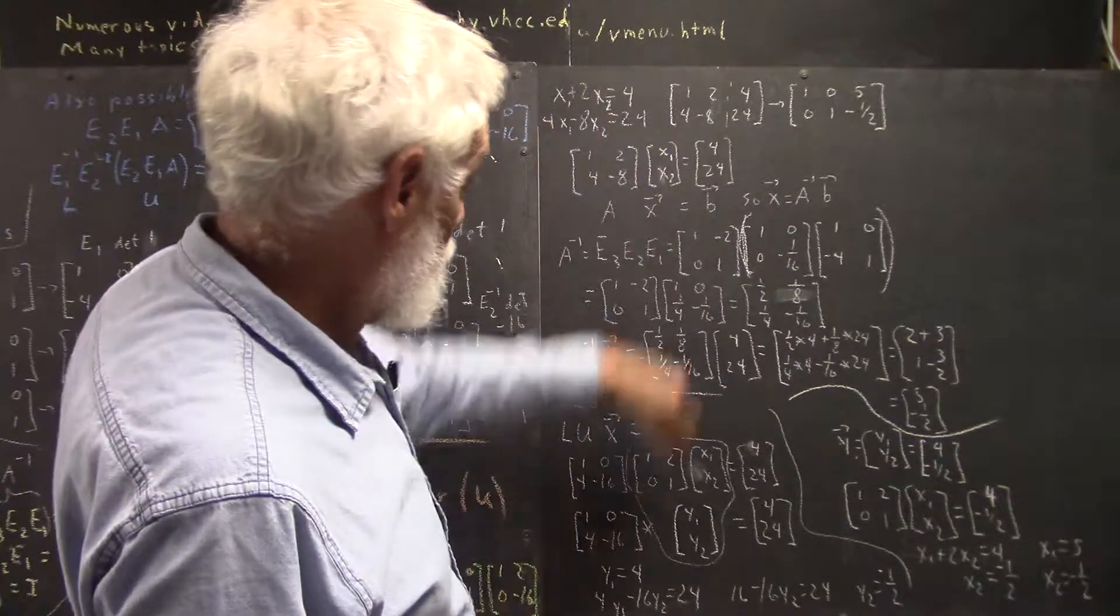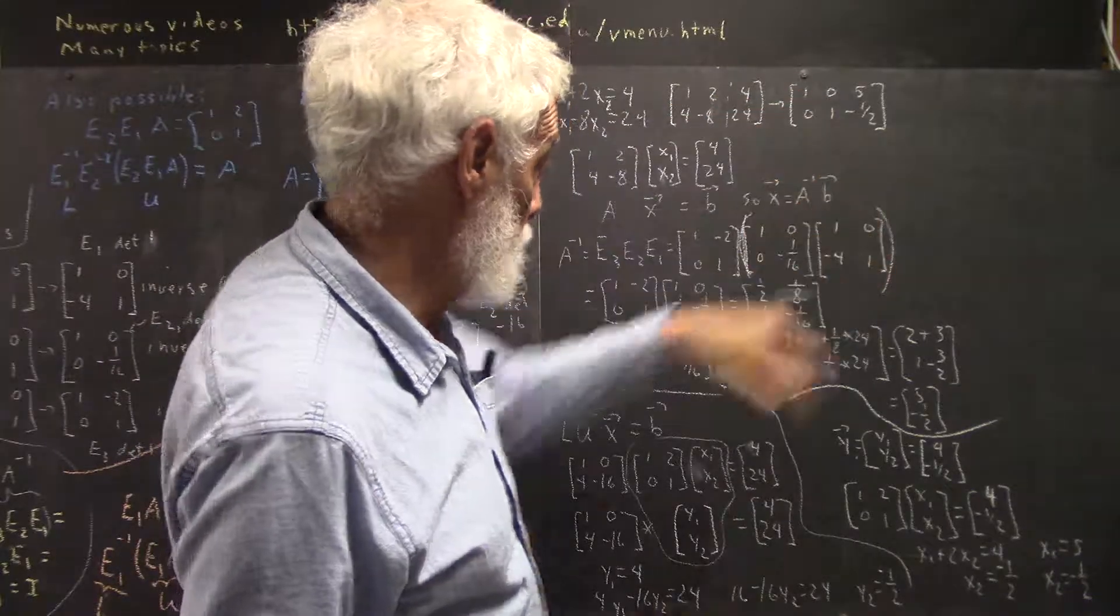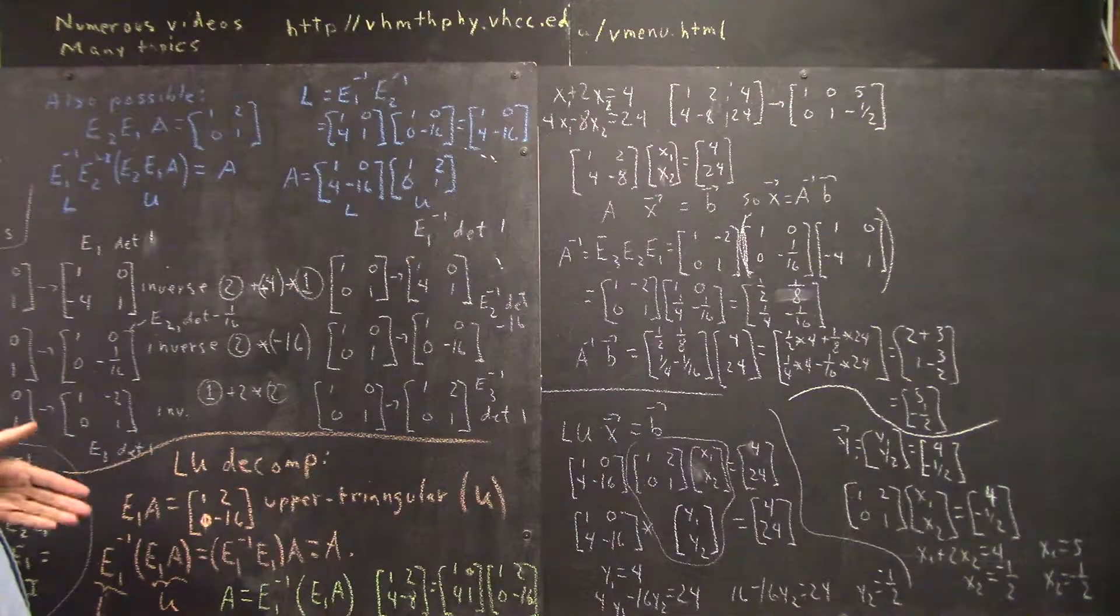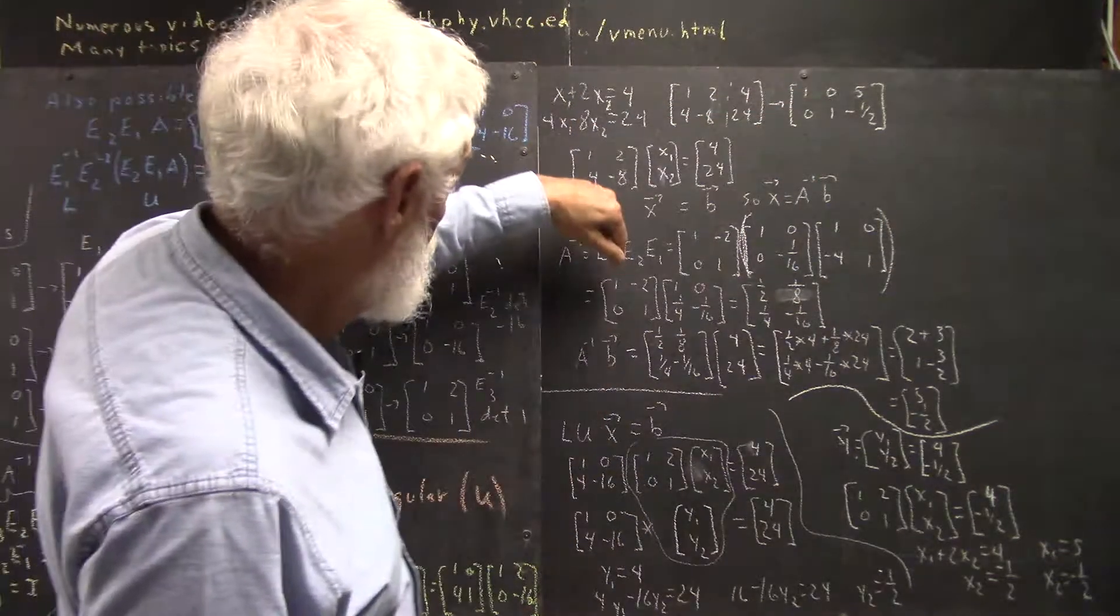So A inverse is not E1, E2. E3 times E2 times E1 is the inverse of the matrix A. Well, here are the three elementary matrices. You can see them right here.